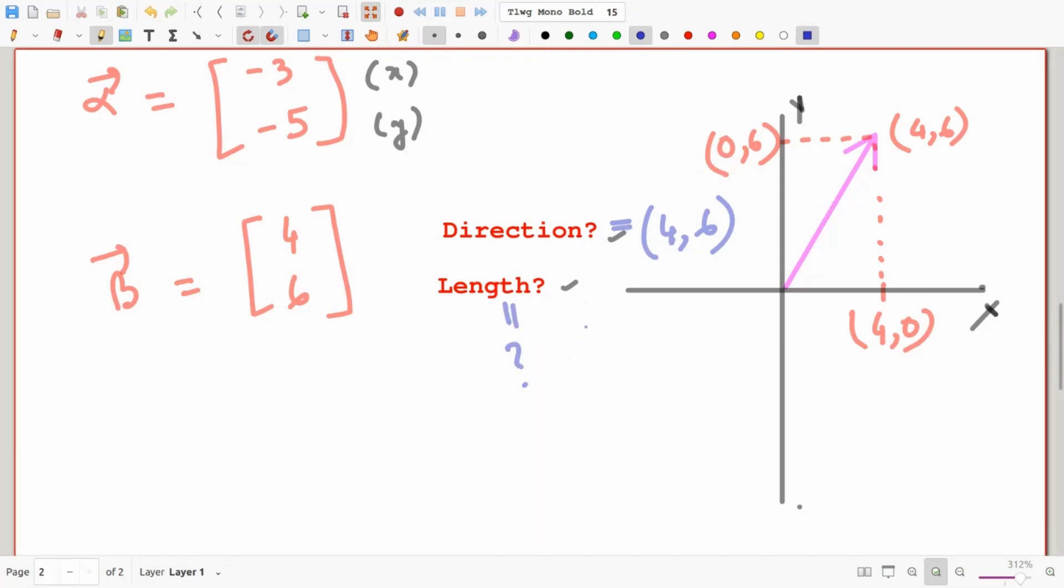Well, we can find the length of beta equal 4, 6. But before we do that, let's just get some notation out of the way. When we are talking about the length of a vector, we write these double bars around it, almost like a double absolute value around the vector. And now this is read the length of beta.